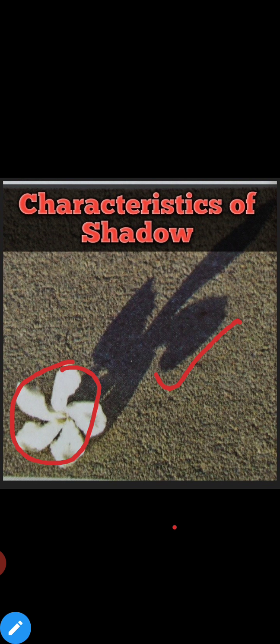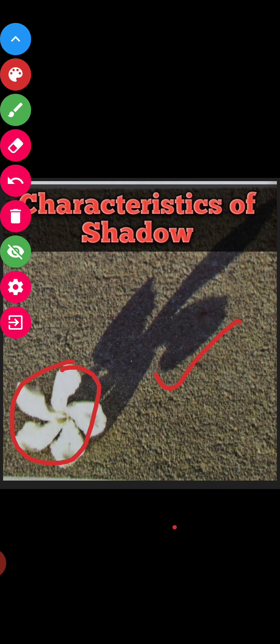I hope आपको clear हो गया होगा what is shadow and what is the characteristic of shadow. So एक बार revise कर लेते हैं — shadow is the dark area formed by an opaque object.